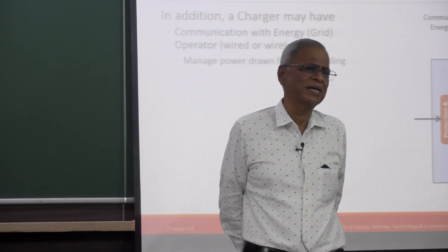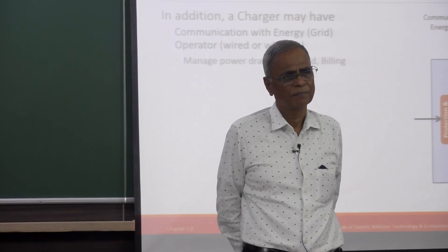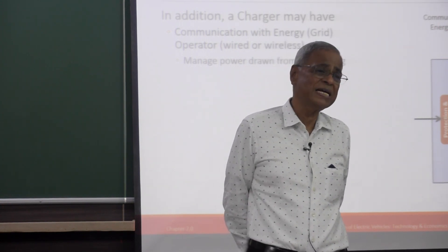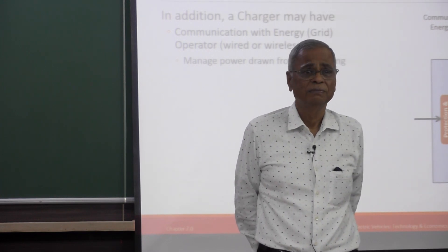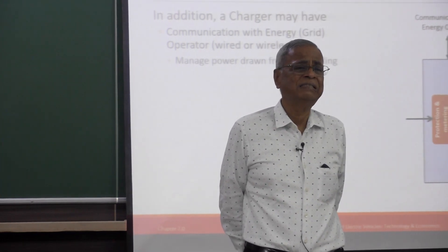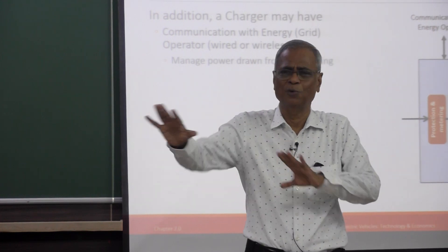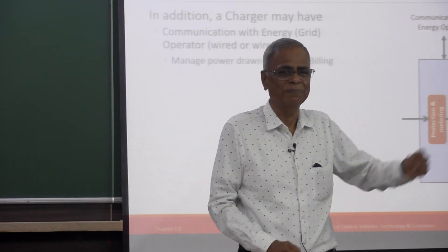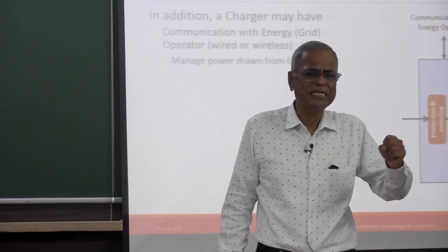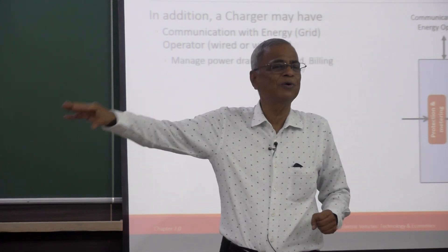What did you do conventionally to match supply and demand? 10 years back in India, the generation was always less than the load, demand was always higher than supply. Then it was easy, you do a blackout in areas.